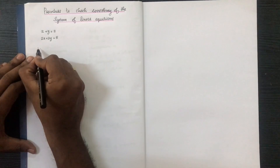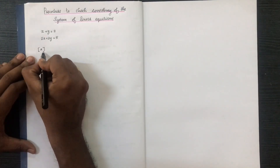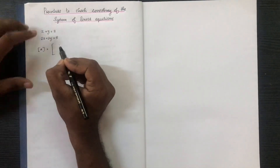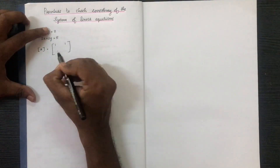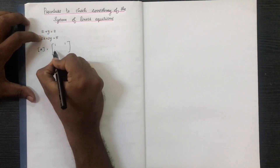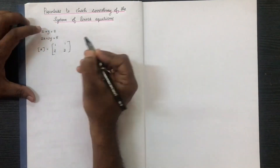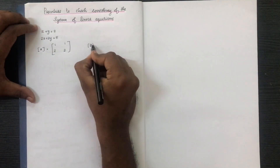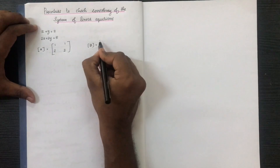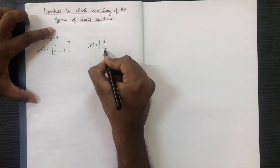Now we have matrix A. The first row has x-coefficient 1 and y-coefficient 1. The second row has x-coefficient 2 and y-coefficient 2. Matrix B is the right-hand side of the constants, equal to 2 and 5.